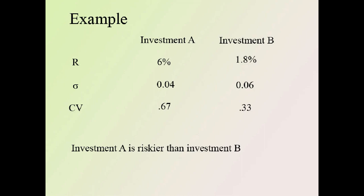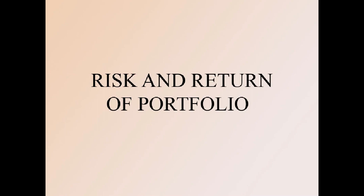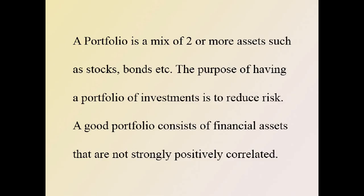Here is an example. The expected return of Investment A is 6% and Investment B is 1.8%; the standard deviation of Investment A is 0.04 and Investment B is 0.06. Using the equation, the CV of Investment A is 0.67 and the CV of Investment B is 0.33. Since Investment A has a greater CV than Investment B, Investment A is more risky.